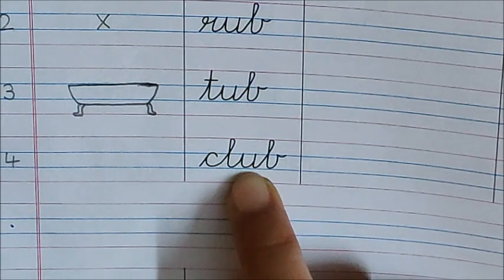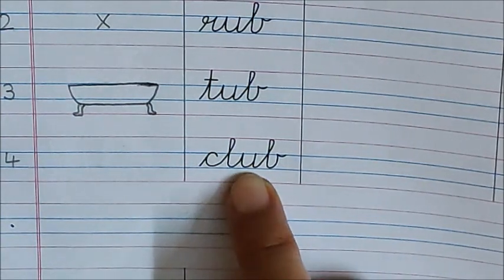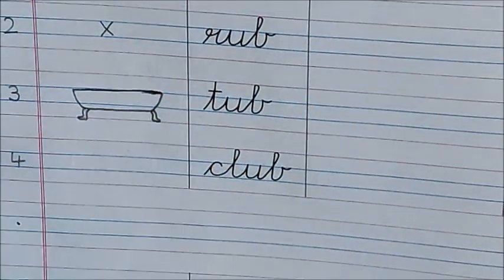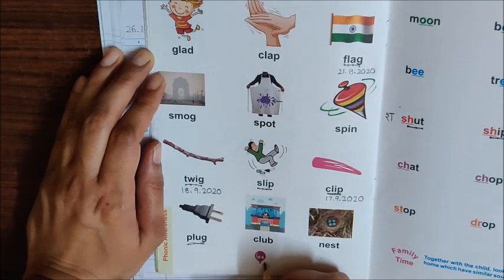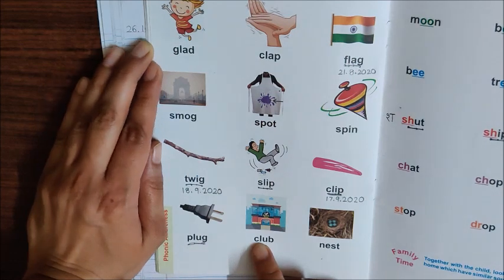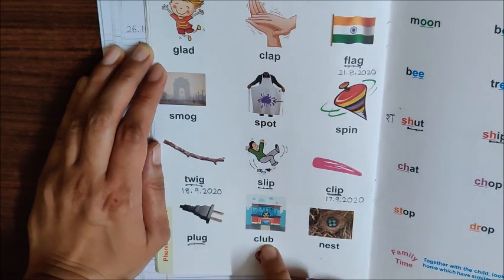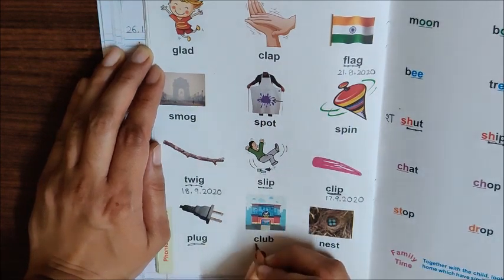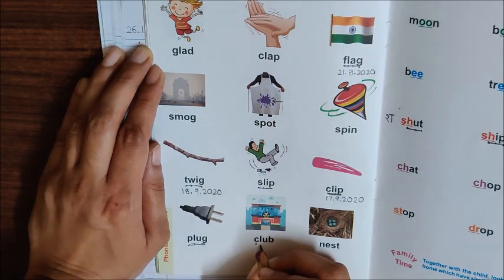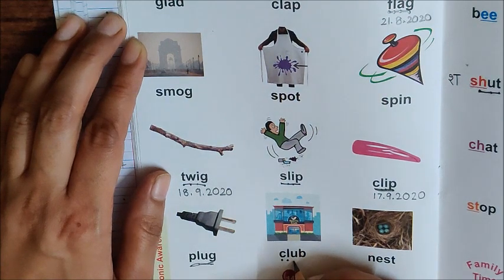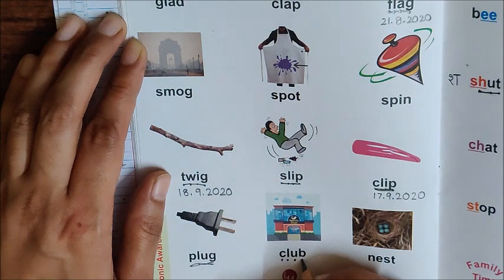Children, we have a new word here. So take your reader, open page number 14. See children, this is page number 14 and here is the word club. Children, what is the first sound here? C. What is the next sound? L. What is the next sound? U. And what is the last sound? B.